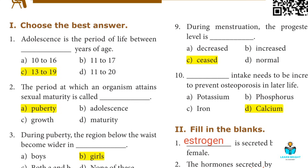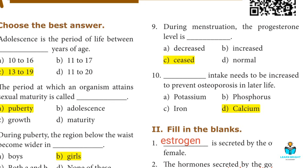Ninth question: During menstruation, the progesterone level is? Answer C: Low.